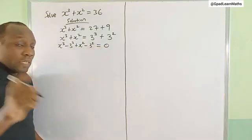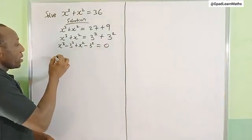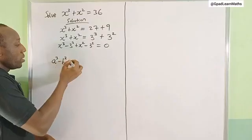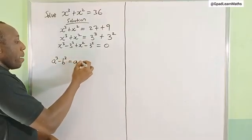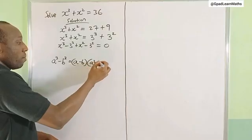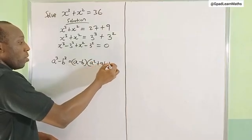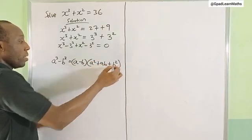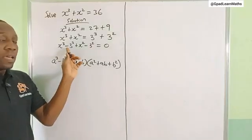Using algebraic identities, a³ - b³ which is equal to (a - b)(a² + ab + b²), this is what I'm going to use on this one.